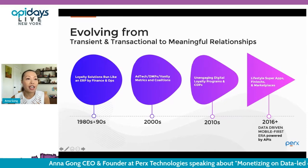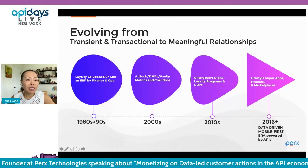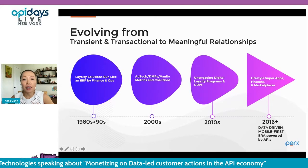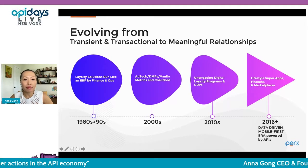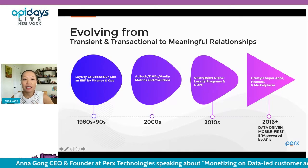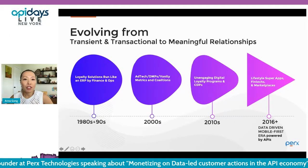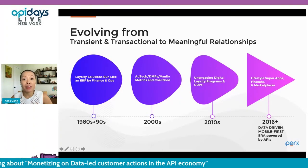Looking at the loyalty solutions landscape — 20 to 30 years back it was run like an ERP, and it still is in the back office. Over the last 10 to 20 years, many ad tech platforms emerged, and now there's a very competitive landscape around customer data platforms, analytics, and CRMs — all integrating historical data to recommend the next best action.